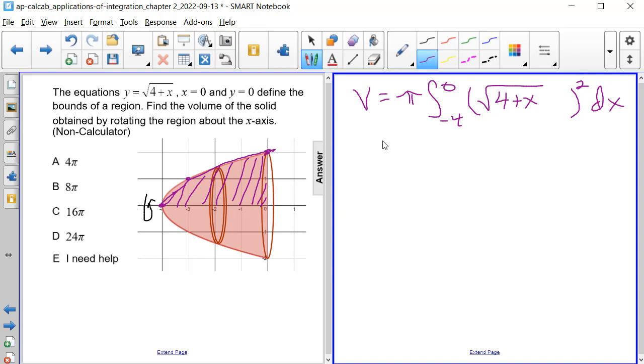And now we can solve this. So we have pi times the integral from negative 4 to 0 of, well, the square root of 4 plus x squared is just going to be 4 plus x and then dx.